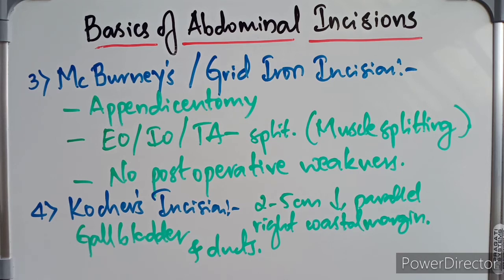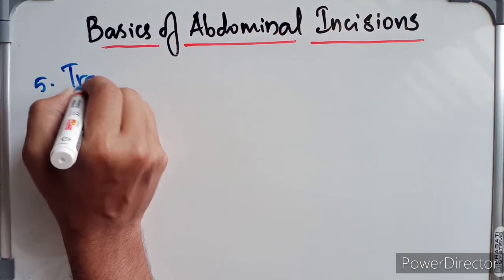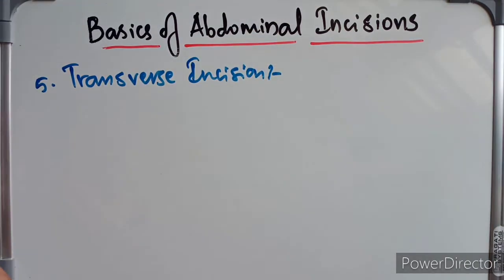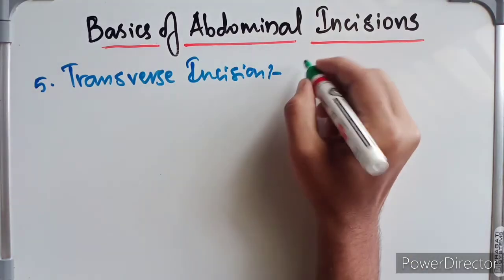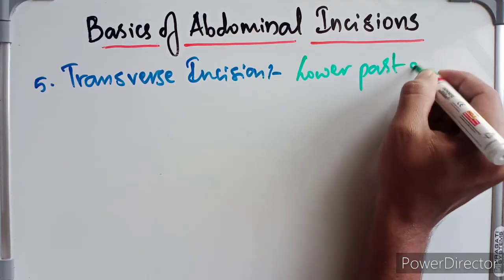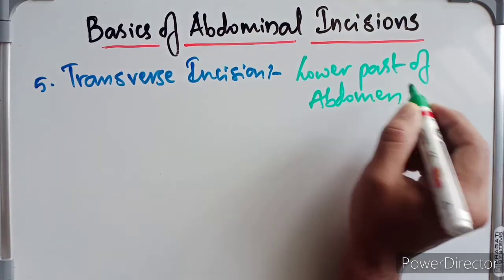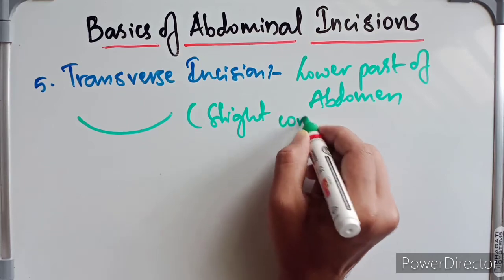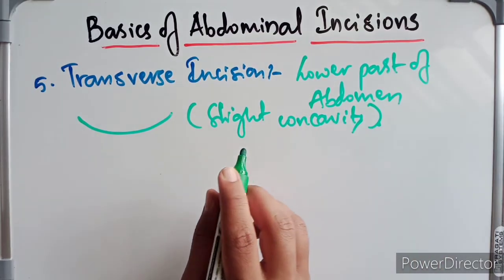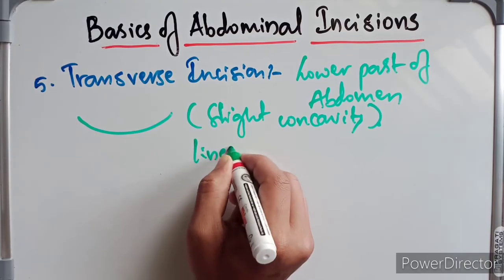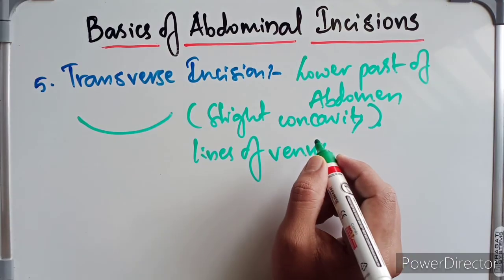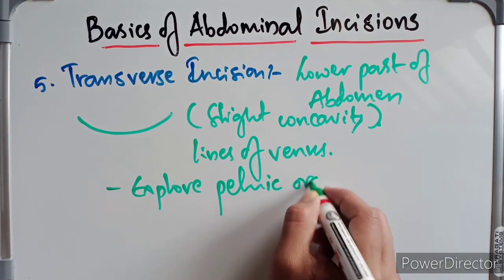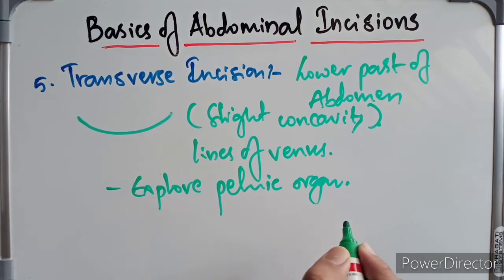Lastly, we are discussing the transverse incision. It is given along the lower part of the abdomen, about 2 cm below the level of the umbilicus along the line of Pfannenstiel. It is used to explore the pelvic organs, especially in surgeries related to the uterus and ovaries.